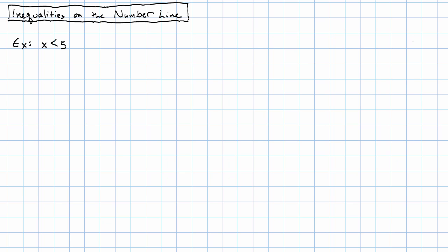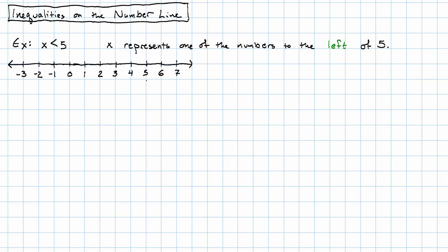Let's say we have the inequality x is less than 5. Let's take a minute and think about what that means. That means that x has to represent one of the numbers to the left of 5 on the number line. Let's take a look at a number line and see what I mean. Here's 5, and it's pretty clear that 4, 3, 2, and so on are the numbers that are less than 5. In fact, that's how we define less than — less than just means lives to the left on the number line.